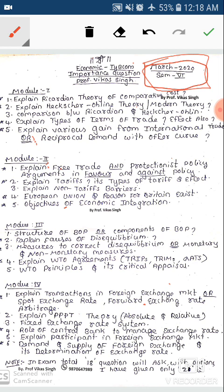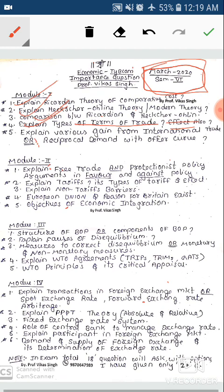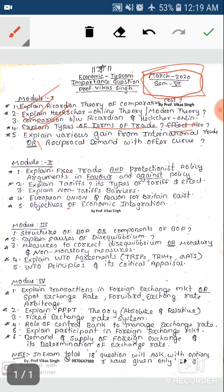Module 1's most important questions: Ricardian theory of comparative cost - that is very important. Then Heckscher-Ohlin theory, also called modern theory - this is important. Check one limitation of it. Comparison between Ricardian and Heckscher-Ohlin theory has been asked before, so check that too. Types of terms of trade is important - gross barter terms of trade, net barter terms of trade, income terms of trade, single factoral terms of trade.